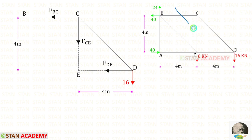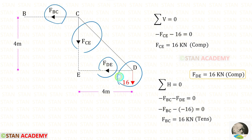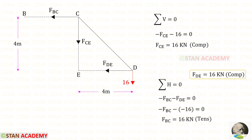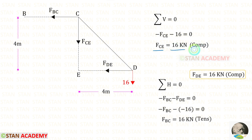Now I am going to make the second section like this, and I am going to take the right side portion and do the analysis. You can see that here there is no inclined force — there are only horizontal forces and vertical forces. In this case, we can use sigma V equals 0 and sigma H equals 0 to find the unknowns very easily. Applying sigma V equals 0: FCE is acting downwards, so it will be negative. 16 is also acting downwards, so it is also negative. For FCE, we will get a negative value, meaning it is compressive.